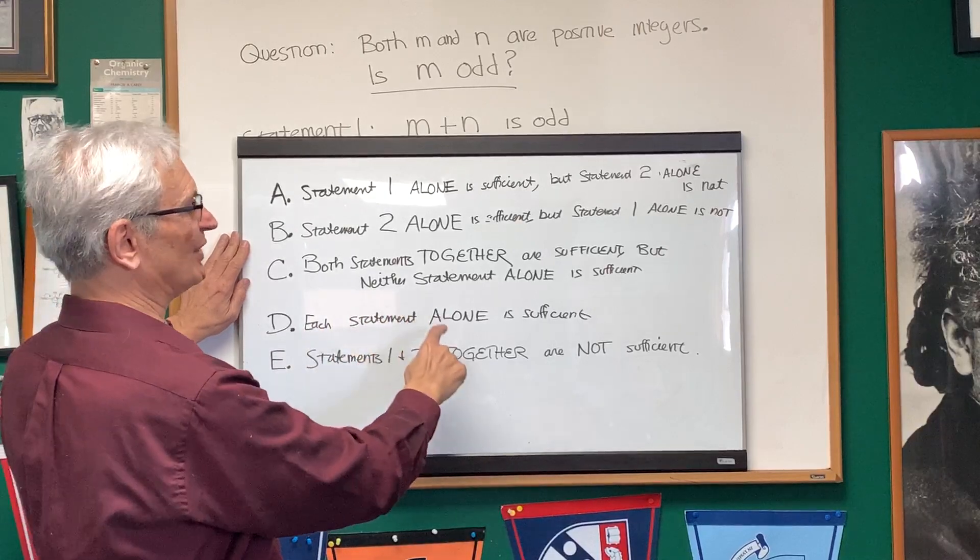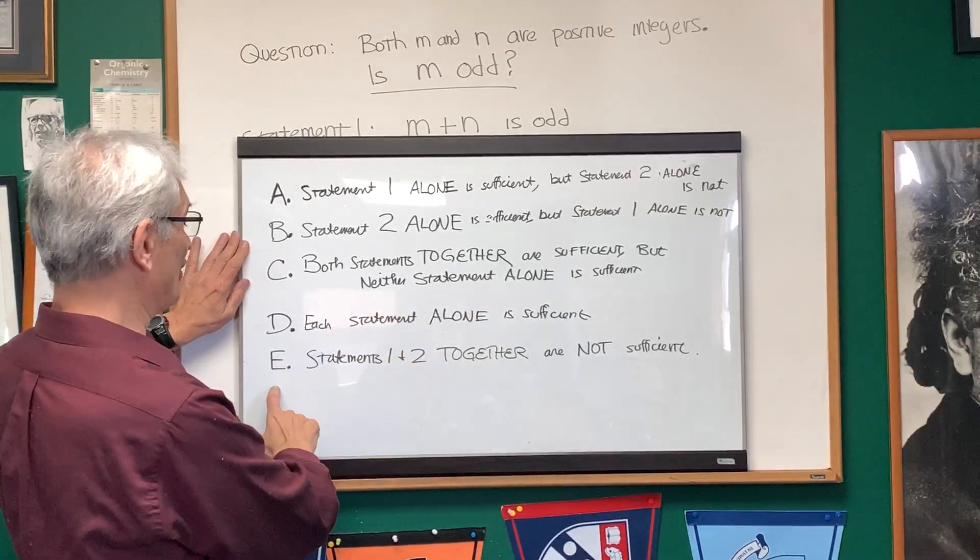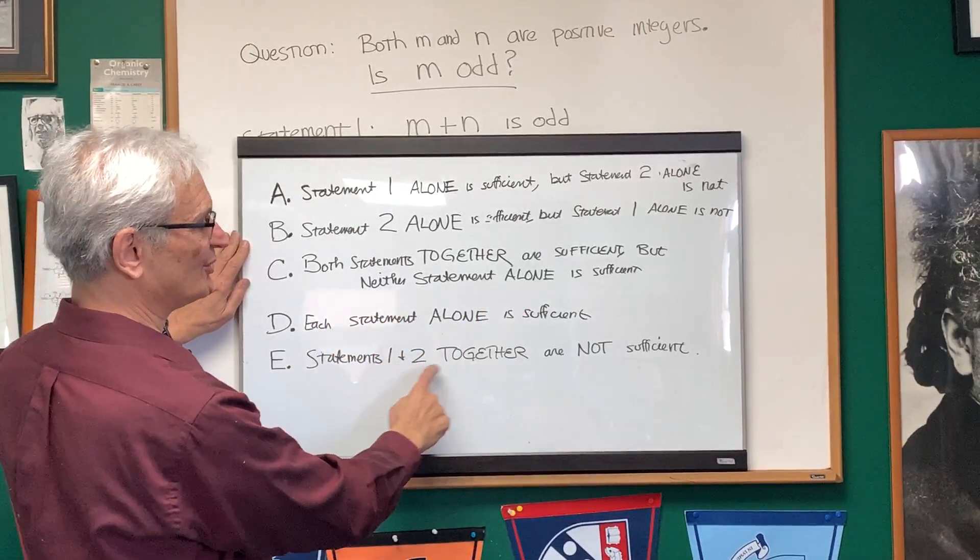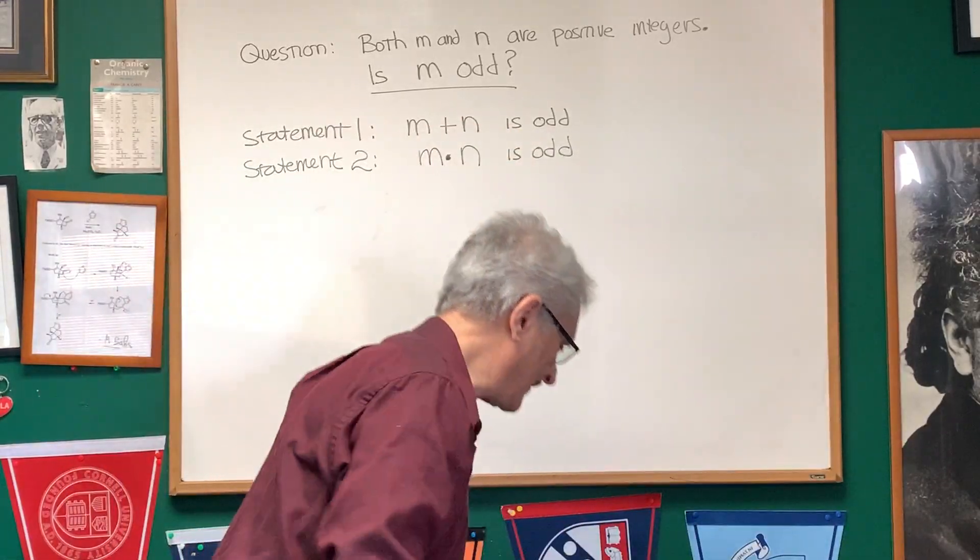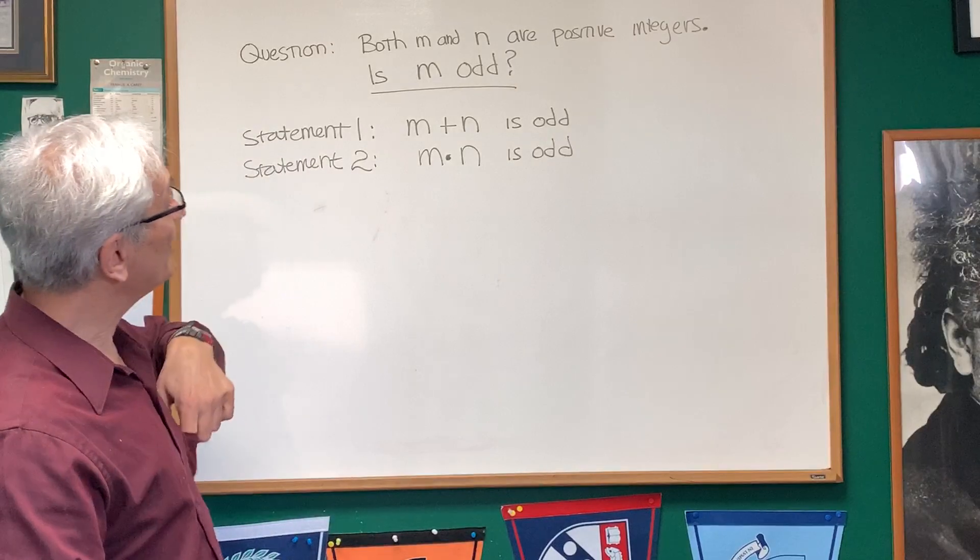Choice D: each statement alone is sufficient. And finally, choice E: statements one and two together are not sufficient. Okay, so let's look at the expression that we're going to have to evaluate.